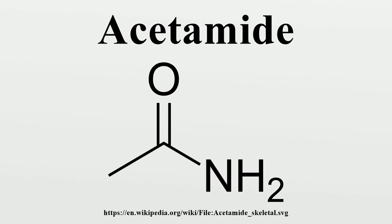Laboratory-scale acetamide can be produced by dehydrating ammonium acetate: CH3COONH4 → CH3CONH2 + H2O. Alternatively, acetamide can be obtained in excellent yield via aminolysis of acetyl acetone under conditions commonly used in reductive amination.